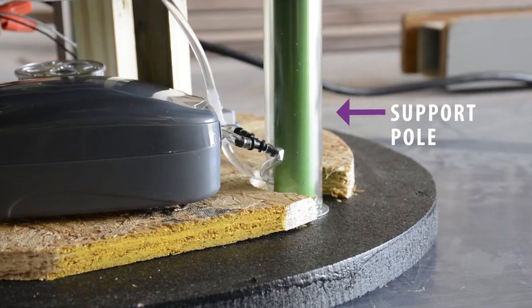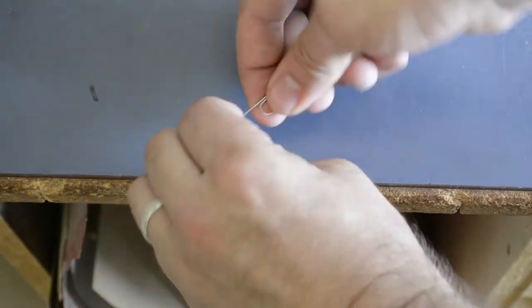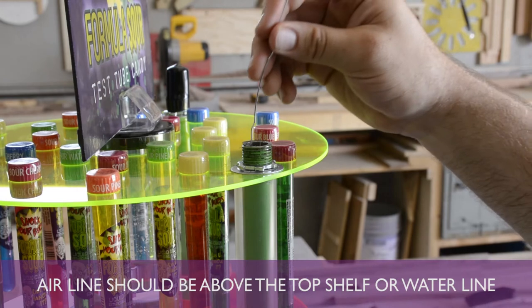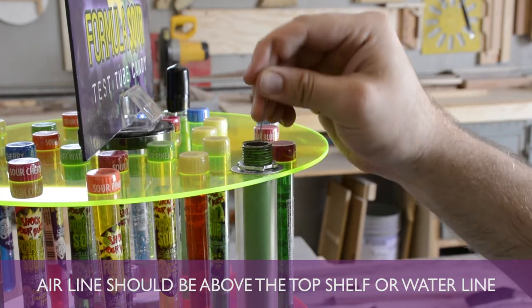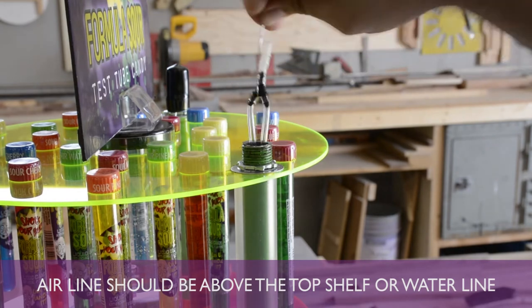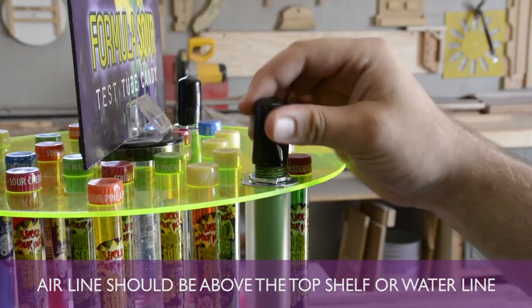Identify which support pole the air line is in and remove the black cap. You can use a paper clip and unfold it to help pull the line up. Use the paper clip to hook the air line and position it so that the Y of the line is positioned above the support pole and put the black cap back in place over the line.